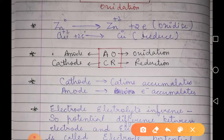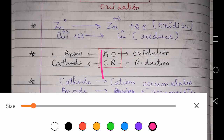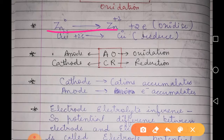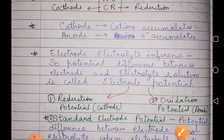To identify anode and cathode, we use the mnemonic AOCR: AO means wherever oxidation occurs, that will always be the anode; CR means wherever reduction occurs, that will always be the cathode. Since oxidation takes place at zinc, zinc is the anode. Since reduction takes place at copper, copper is the cathode.